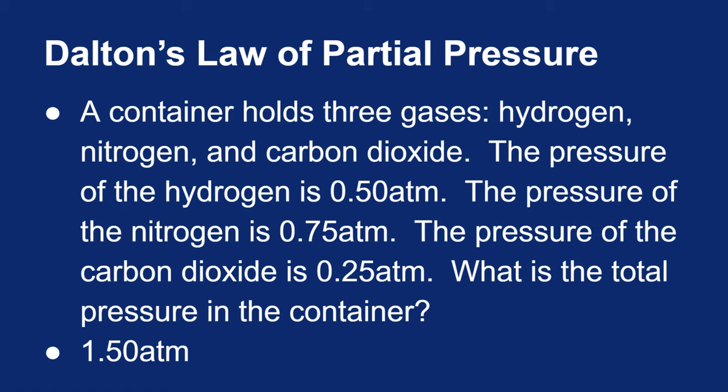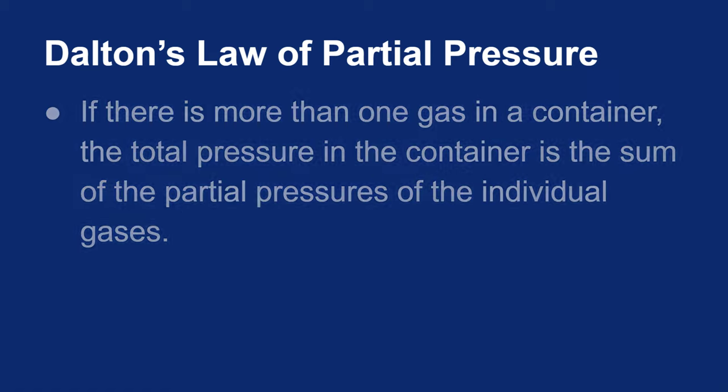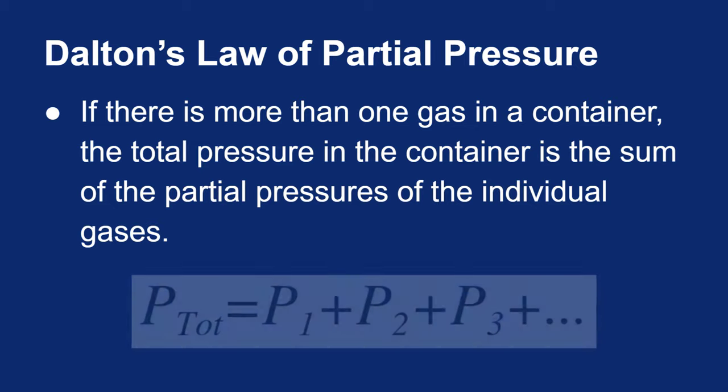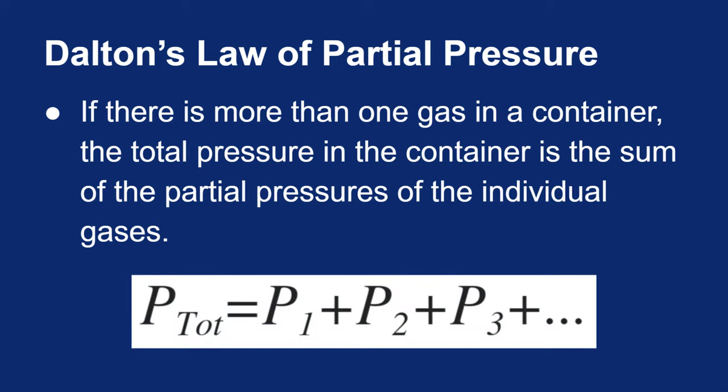He did the experiments and showed this to be true, so he gets the credit for it. But I think it's pretty intuitive. Dalton says that if you have multiple gases in the container, all you have to do to get the total pressure is just to add up the pressures of the individual gases, what we refer to as partial pressures. Partial pressure of the hydrogen plus the partial pressure of the nitrogen plus the partial pressure of the carbon dioxide equal the total pressure of that container.